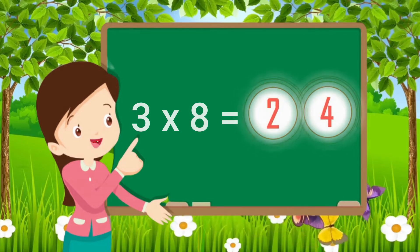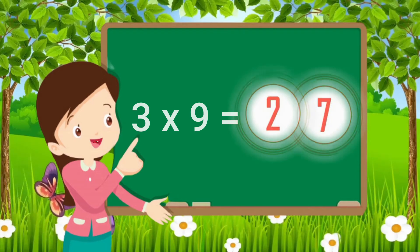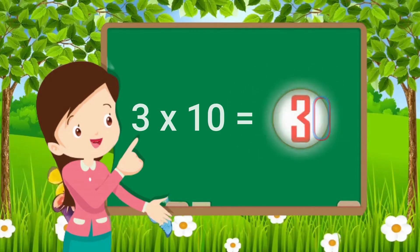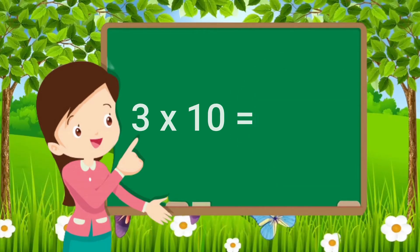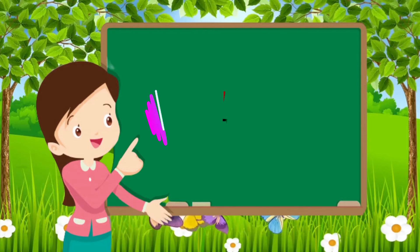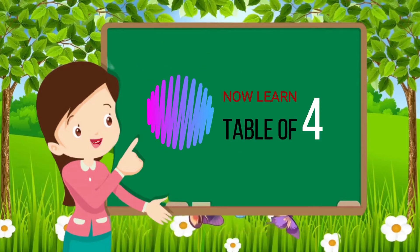Three eights are twenty-four. Three nines are twenty-seven. Three tens are thirty. Now learn table of four.